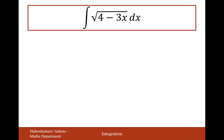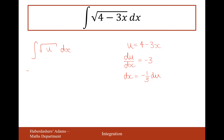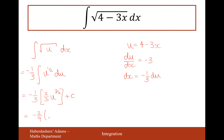Next, u = 4 − 3x, integrating √u dx. We differentiate to get du/dx = −3, so dx = (−1/3) du. Factorising −1/3 to the front gives −(1/3) ∫u^(1/2) du. Increasing the power to 3/2 and dividing gives 2/3, so the answer simplifies to −(2/9)(4 − 3x)^(3/2) + c.